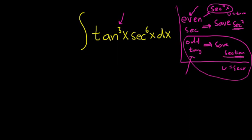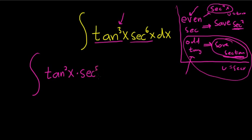So let's save a secant tangent. You can do it both ways, but this way will be easier. We're saving a secant tangent. That means we're going to borrow a copy of secant and tangent from each of these. So we'll be left with the tangent squared of x times secant to the 5th of x. And then here we have a secant x tangent x dx.